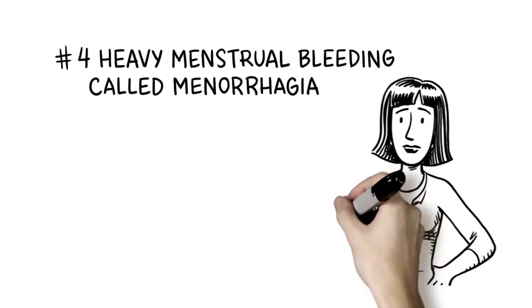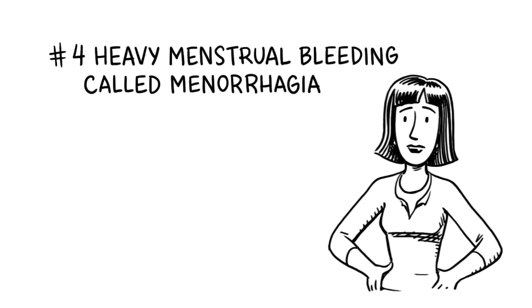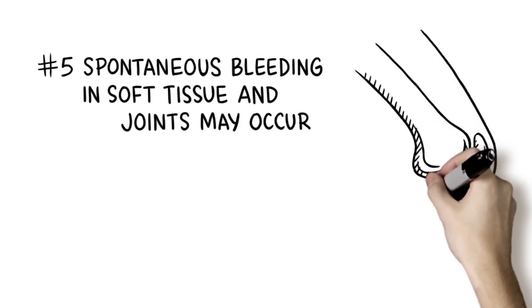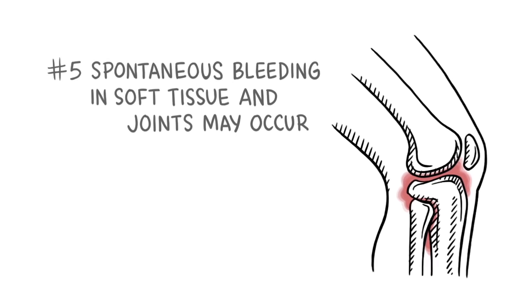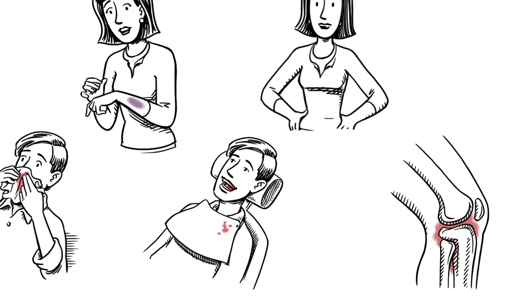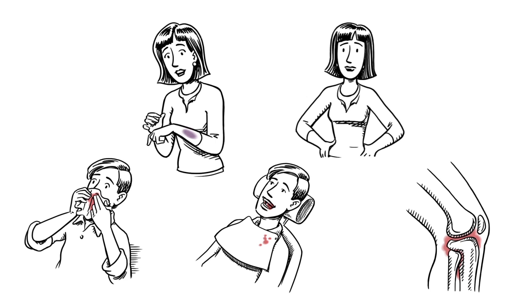Women may experience heavy menstrual bleeding called menorrhagia. In more severe cases, spontaneous bleeding in soft tissue and joints may occur. Individuals with VWD may experience some or all of these symptoms with varying severity.